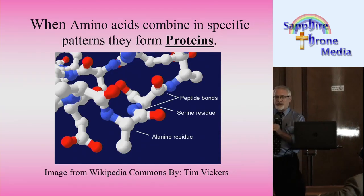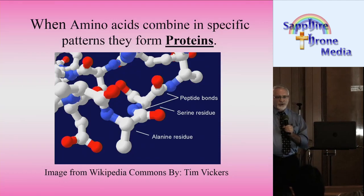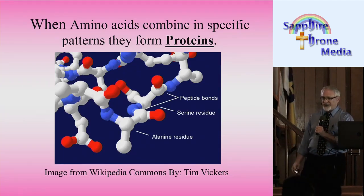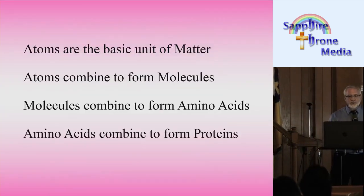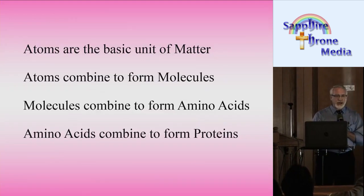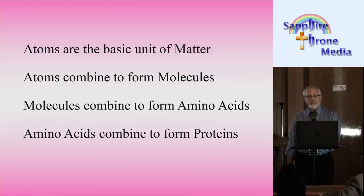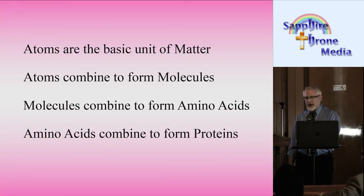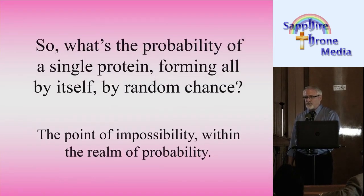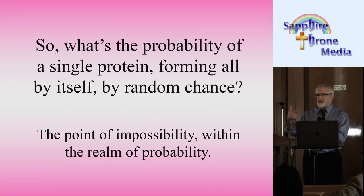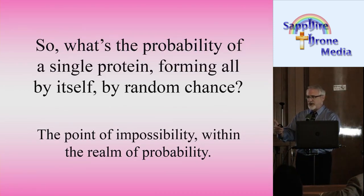You can see that there's a complex level of structure just to get to a single, simple protein. Atoms are the basic unit of matter. Atoms combine to form molecules. Molecules combine to form amino acids. And amino acids combine to form proteins. So what's the probability of a single protein forming all by itself by random chance?